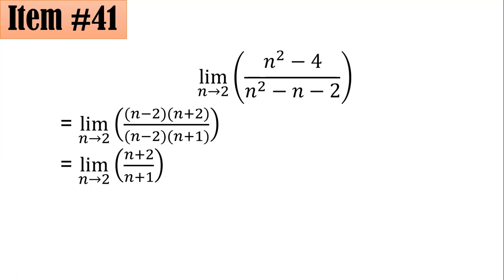From here, we can now substitute n by 2. So we have 2 plus 2 all over 2 plus 1, or you get 4 thirds letter B.